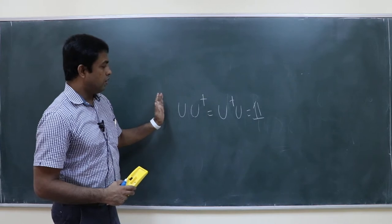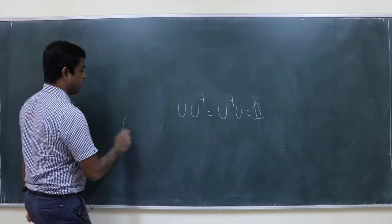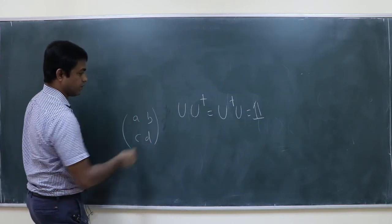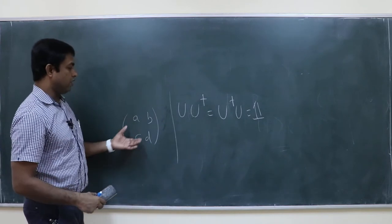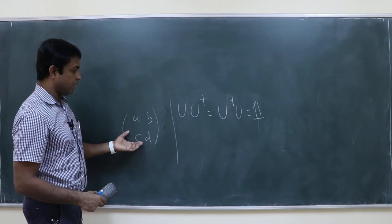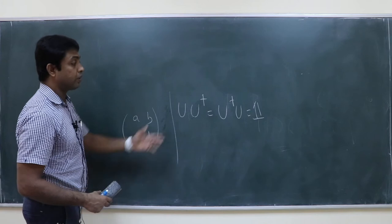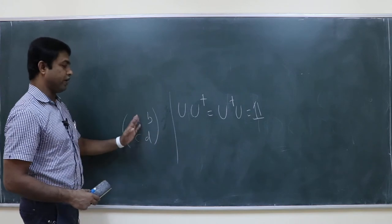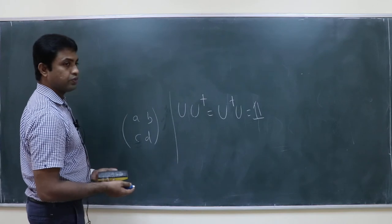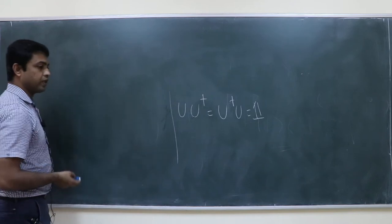If I give you a general matrix [a, b; c, d], a question in the examination could be: what is the condition that this matrix is unitary? You need to find conditions on a, b, c, d. Can you give me an example of a unitary matrix?